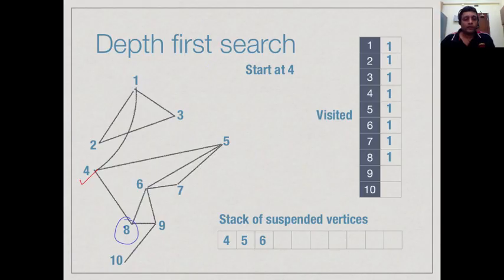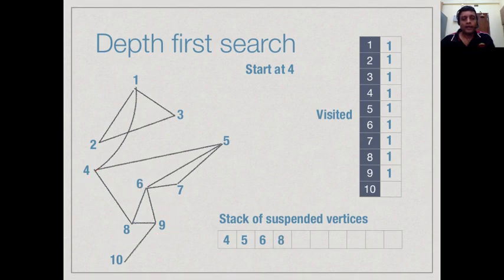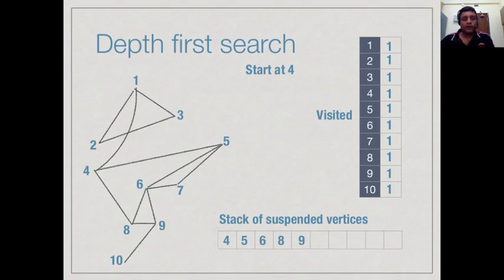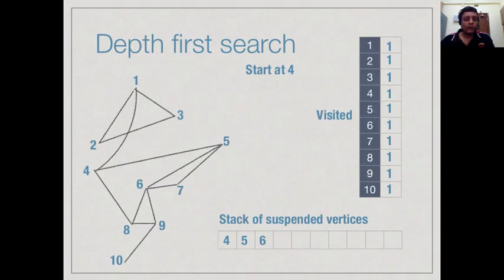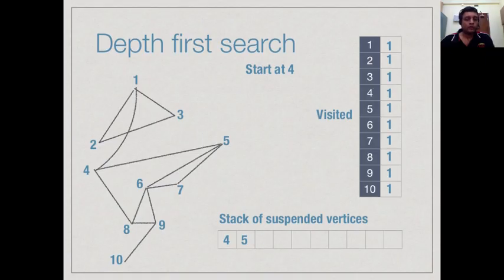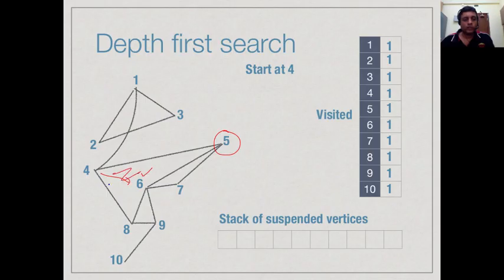From 8 we have 4, 6 and 9. Both 4 and 6 are already done but 9 is new, so we add 9 and suspend 8. From 9 we find a new neighbor 10, so we add 10. Then 10 has nothing new, so we go back and process 9, which has no more new neighbors. We then go back through 8, 6, 5, and finally back to 4. At 4, neighbor 8 is already done, so there is nothing more to do and the exploration is complete.